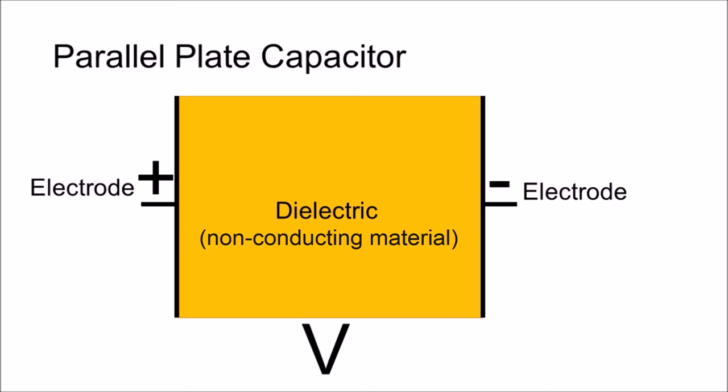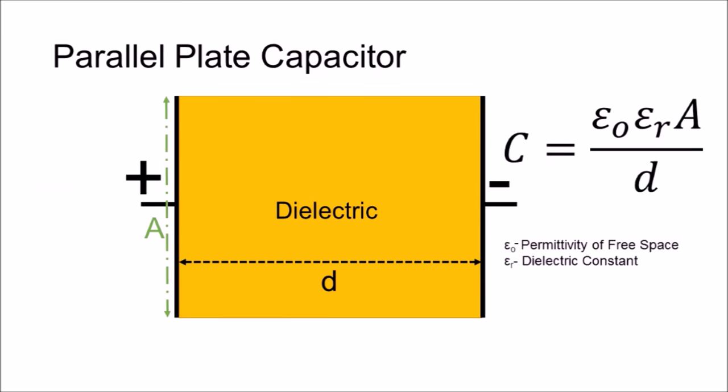Unlike batteries, no chemical reactions occur during operation, so capacitor lifetimes are typically higher. Capacitance is a measure of the device's ability to store charge and is given by the equation on the screen. It increases with increasing surface area and decreasing charge separation distance.